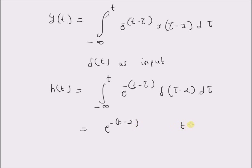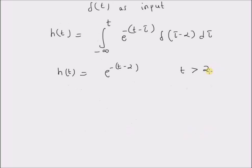The impulse response is h(t) = e^(-(t-2)) for t greater than 2. This condition t > 2 may not be obvious, so let us look at the unit step response s(t) and derive the impulse response in order to understand this condition t > 2.